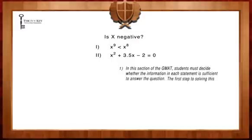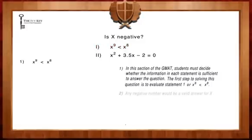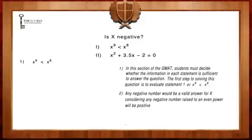The first step to solving this question is to evaluate statement 1, or x^9 < x^8. Any negative number would be a valid answer for X, considering any negative number raised to an even power will be positive, and any negative number raised to an odd power will be negative.